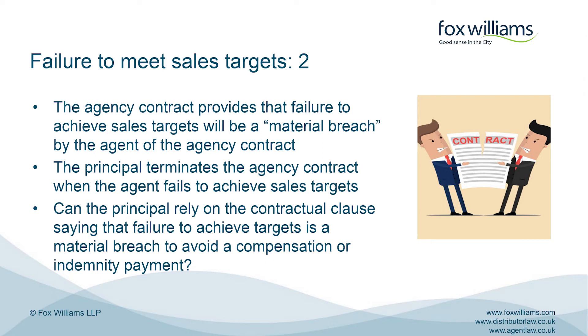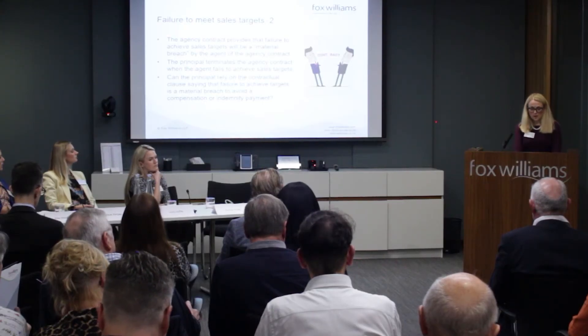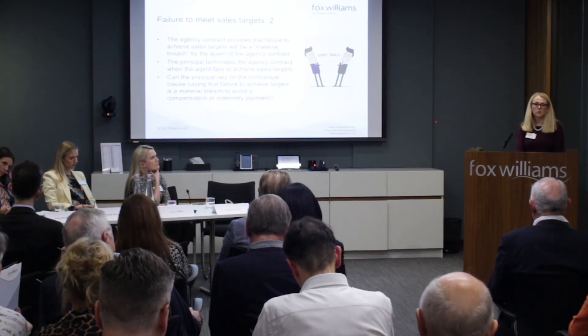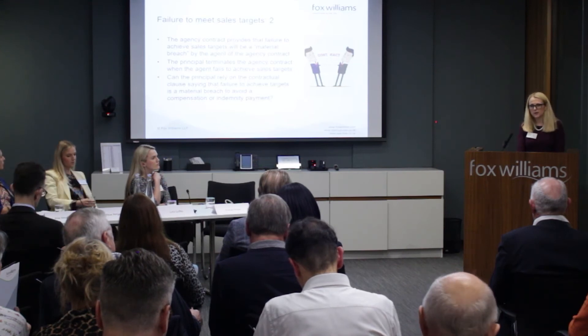However, the key question is whether the principal is let off the hook from paying compensation or indemnity to the agent. This point was addressed in the case of Crane v Sky, where the judge said that whatever the contract said — in that case the contract provided that particular breaches were to be seen as automatic material breaches — the principal could only rely on a breach of contract to avoid paying compensation or indemnity if the breach was, as a matter of law, a repudiatory breach. So whatever the contract tried to do in elevating a minor breach to a material breach, the test the court would apply was: was the breach repudiatory? Was it sufficiently serious as a matter of law?